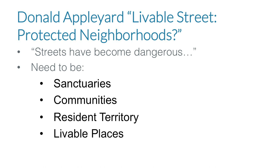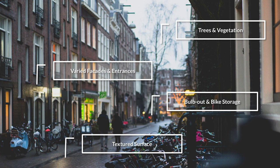This idea has been capitalized on by many theorists over time. One of the most prominent thinkers is Donald Appleyard and his partner Alan Jacobs, who focused on livable streets and protected neighborhoods — areas that recognize streets have become dangerous and need to become more livable and bikeable. Sanctuaries, communities, resident areas, livable places — how do they manifest? One way is by facilitating varied facades, trees and vegetation, bulb-outs, and textured surfaces, all enabled by the policies discussed in the last chapter.